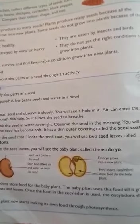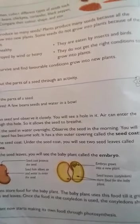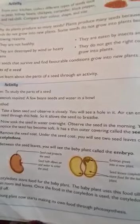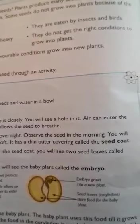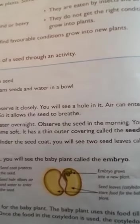Plants are producers — they produce their own food through the process of photosynthesis, which you have learned in a previous class. Photosynthesis is the food-making process in plants. Plants prepare their food in the leaves, where chlorophyll is present. In the presence of sunlight and chlorophyll, plants use water and minerals from the roots and carbon dioxide from the atmosphere to prepare food. This food-making process in the presence of sunlight is called photosynthesis.